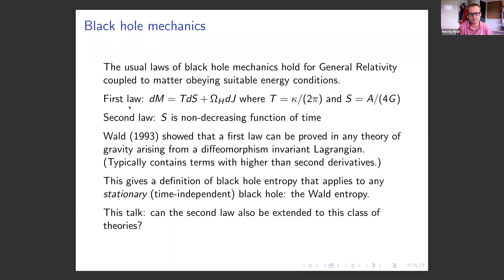The first law of black hole mechanics concerns linear perturbations of stationary black holes. A stationary black hole is a time-independent black hole. If we consider a linear perturbation, it satisfies an equation where on the left-hand side we have the linearized change in the black hole mass, and on the right-hand side T is the Hawking temperature, S is the Bekenstein-Hawking entropy related to the horizon area, Omega is the angular velocity, and J is the angular momentum.